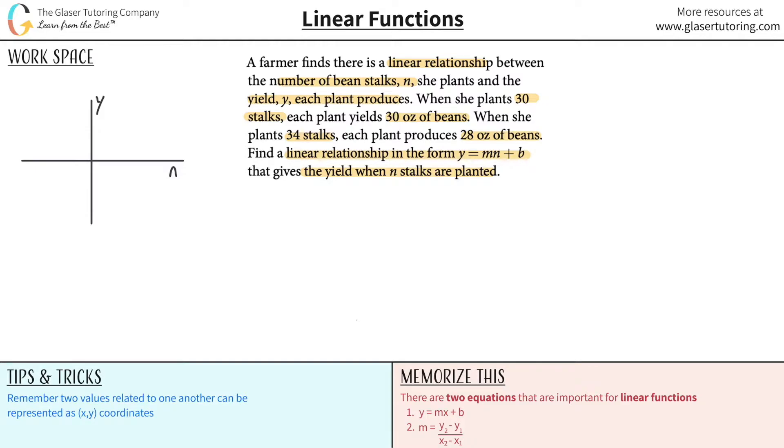So essentially, what we realize here is that they tell us that when 30 stalks are planted, each plant will yield 30 ounces of beans. Okay, so that's like saying, let me see if I can find that point, right? This is like a point on the graph.